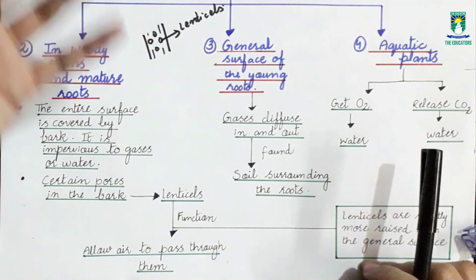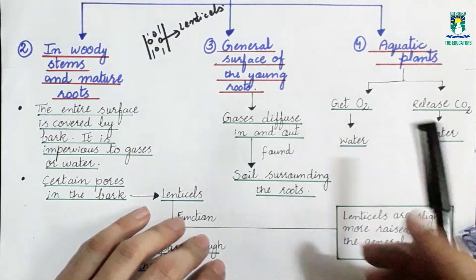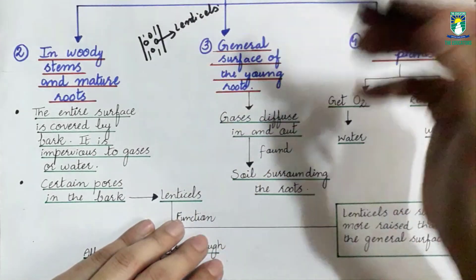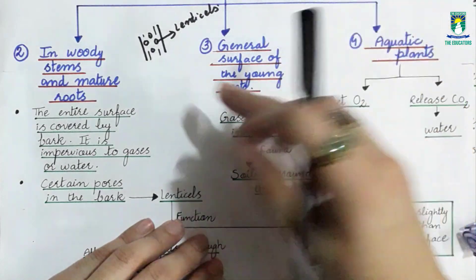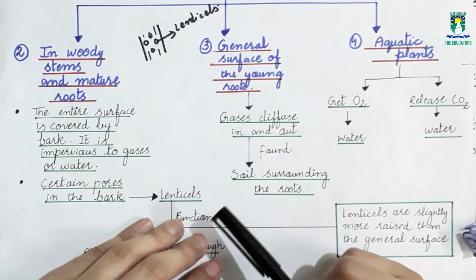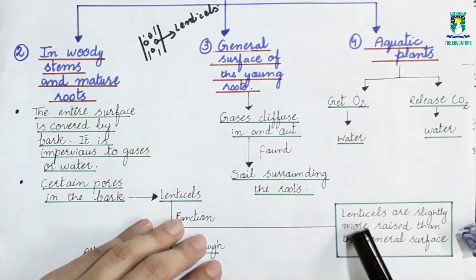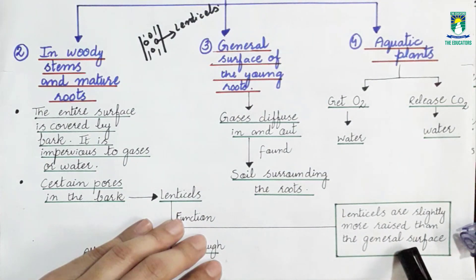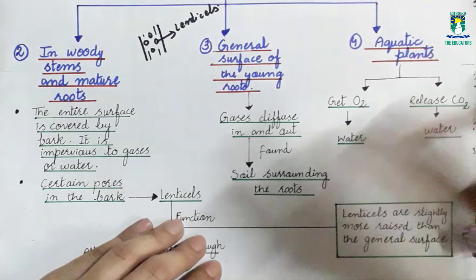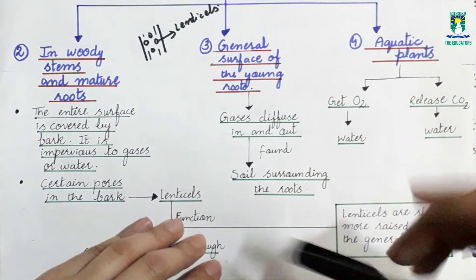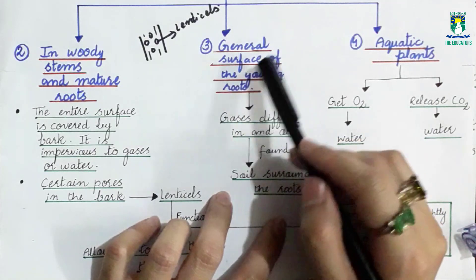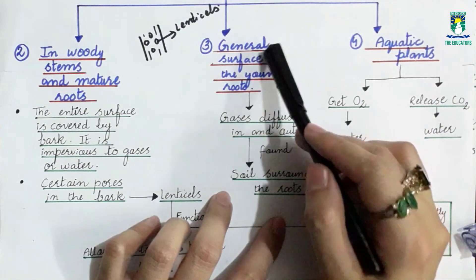If you see the difference between stomata and lenticels: stomata are pores present in young stems and leaves, while lenticels are pores present in woody stems and mature roots. Lenticels are slightly raised on the surface, while stomata are flat on the surface.